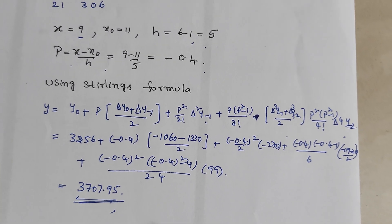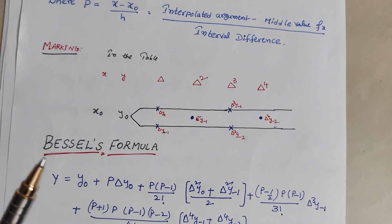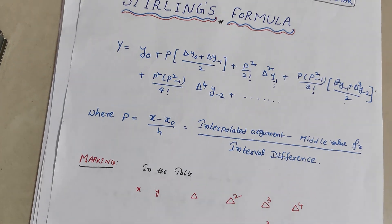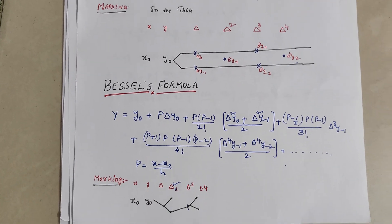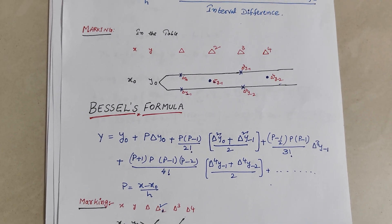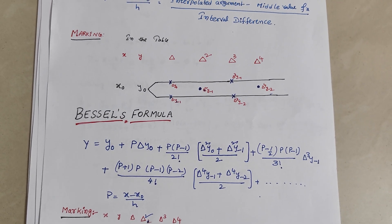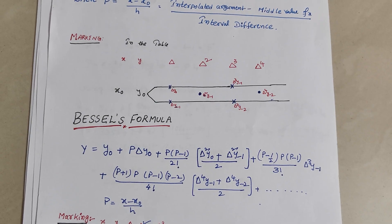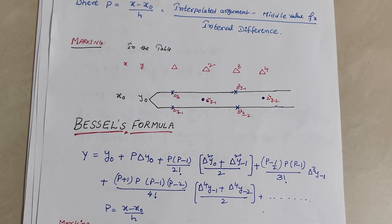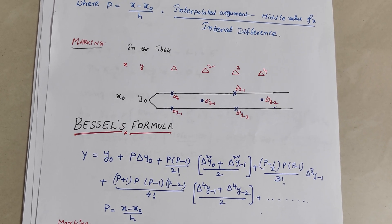Bessel's formula and Stirling's formula are used based on the interpolated argument value markings — use Stirling's marking or Bessel's marking accordingly. Thanks for watching. Please like and share, and subscribe to the channel.